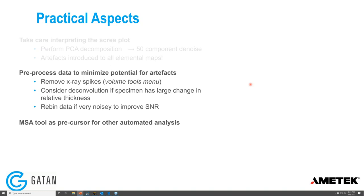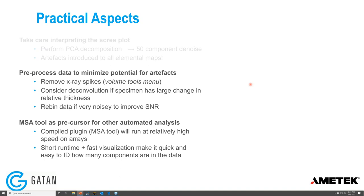The MSA tool is really good as a precursor for other automated analysis. It's a compiled C++ plugin, so it runs at relatively high speed on fairly large arrays, and has nice visualization tools. It can be a very fast way of pre-screening your data and identifying how many components there are — which is helpful if you're running other slower automated analysis methods where you need to enter the number of components.